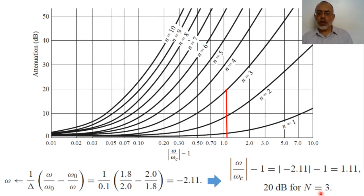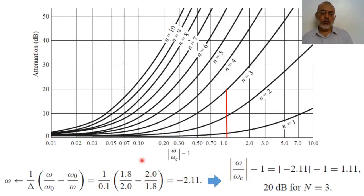For N equals 3, which is the order of our filter, the attenuation at this frequency would be around 20 dB. So the attenuation at 1.8 GHz for this bandpass filter is around 20 dB. We mapped the bandpass filter frequency to the equivalent low-pass filter prototype, determined omega/omegaC, and from that value and the filter order, we determined the attenuation.